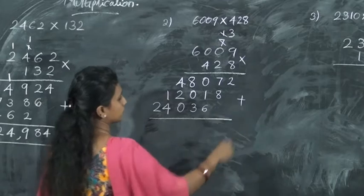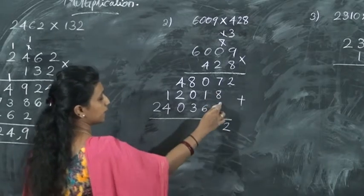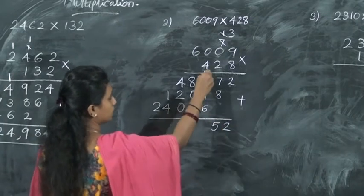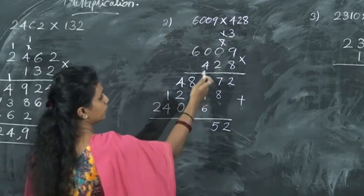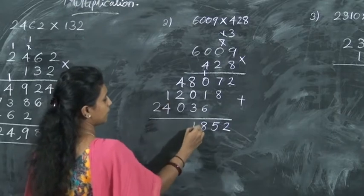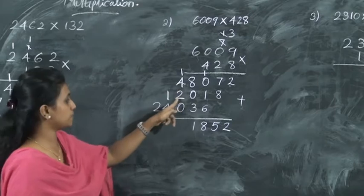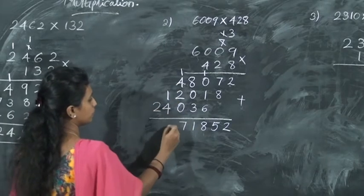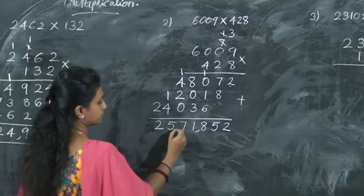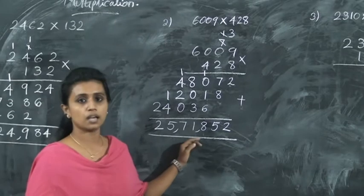Now you want to add all these numbers. First 2. 7 plus 8 is 15 — write 5 here, 1 carried over. Then 1 plus 1 is 2, plus 6 is 8, plus 3 is 11. Then 1 plus 4 is 5, plus 2 is 7. Then 1 plus 4 is 5. Then comes 2. Put the comma — so 25,71,852 is the answer. Clear?